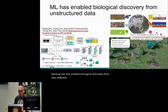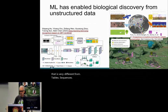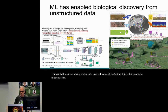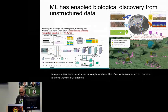By unstructured data I mean data that is very different from tables or sequences — things you can easily index into. This includes, for example, bioacoustics, images, video clips, experiments, remote sensing. And there's an enormous amount of machine learning advances enabled for biology, including especially ecology.